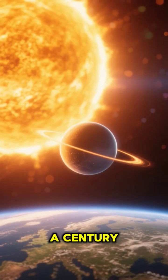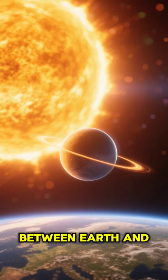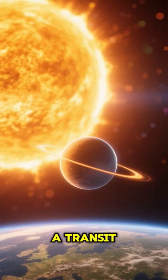About 13 times a century, Mercury passes directly between Earth and the Sun in a rare event called a transit.